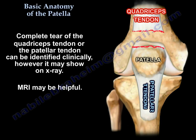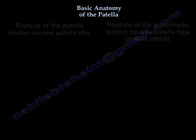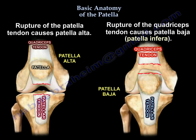Complete tear of the quadriceps or the patellar tendon can be identified clinically; however, it may show on an x-ray, and an MRI may be helpful. Rupture of the patellar tendon causes patella alta. Rupture of the quadriceps tendon causes patella baja, or patella infra.